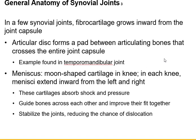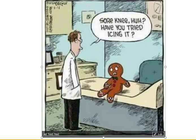Some joints need more protection than just the capsule with synovial fluid. In those cases, fibrocartilage grows inward from the capsule — the one you're most familiar with is the meniscus in your knees, extending in from the left and right. These absorb shock and pressure, so when you jog and your foot hits the ground that force goes up and hits your knee. The meniscus is supposed to absorb that shock so you don't tear your knees out.